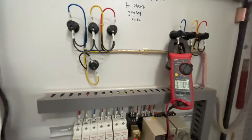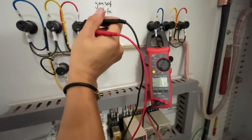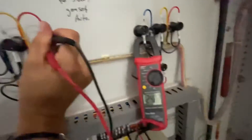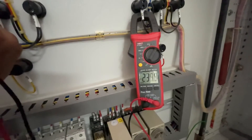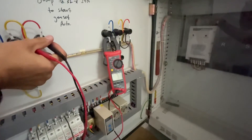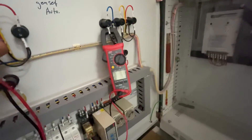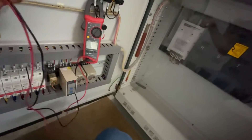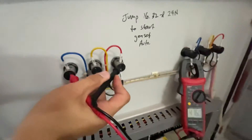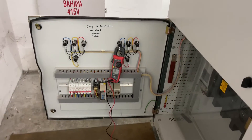Now let's check the voltage. For single phase, red, yellow, and blue are all around 240V. Then checking three phase: red-yellow is about 416V, yellow-blue is 416V, and red-blue is also 416V. There you have it — this is how we check the genset remotely from the ATS panel.